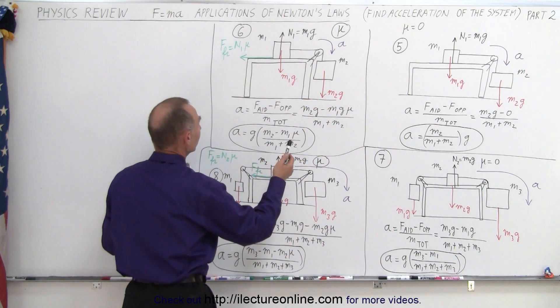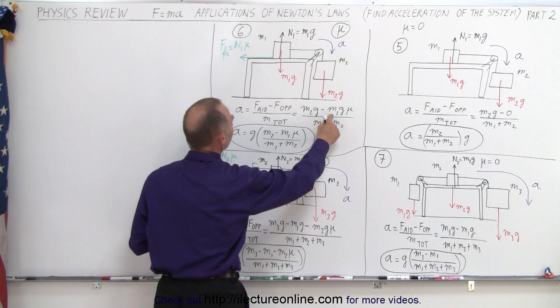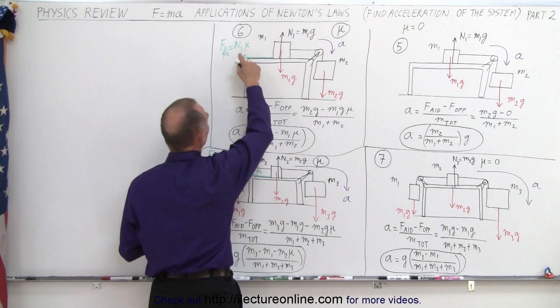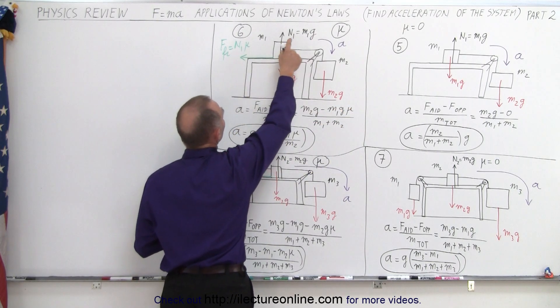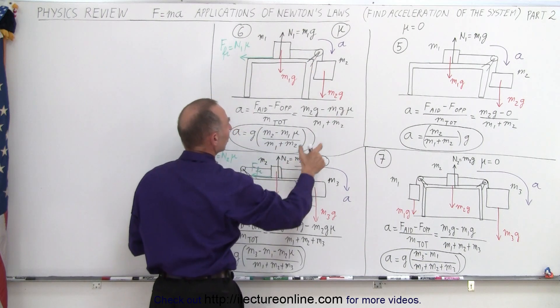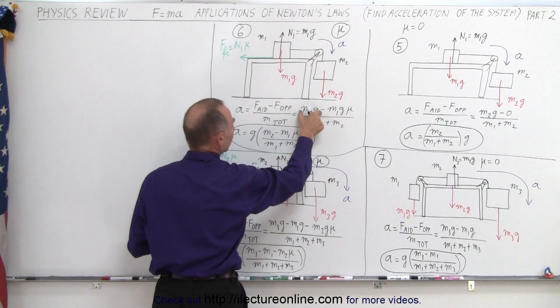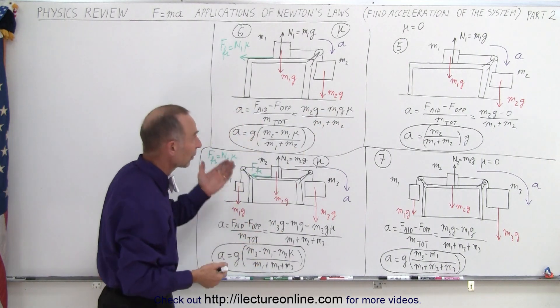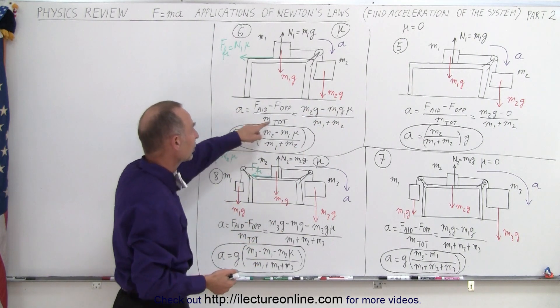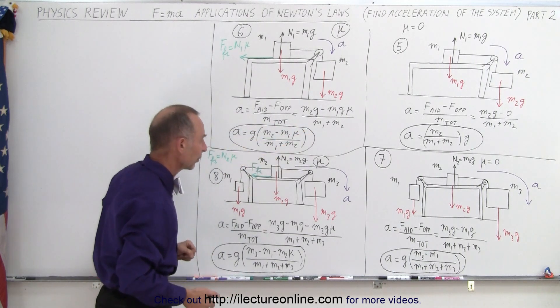Here, when we have friction, notice now we do have an opposing force. The opposing force is the friction force, the normal force times mu, which is M1g times mu. So, subtract the opposing force from the aiding force. Supposedly, the aiding force is bigger than the opposing force, so there will be an acceleration in the indicated direction, and we divide by the total mass to give us the acceleration.